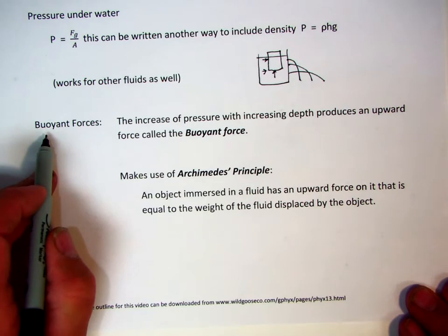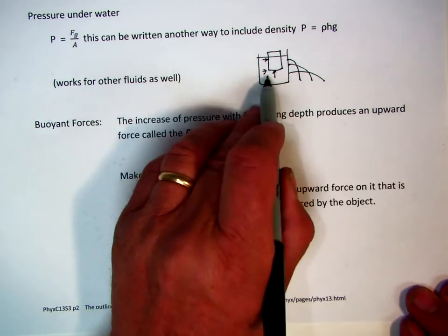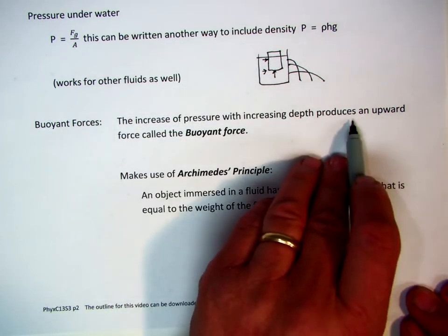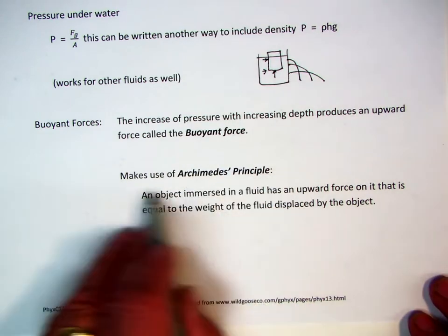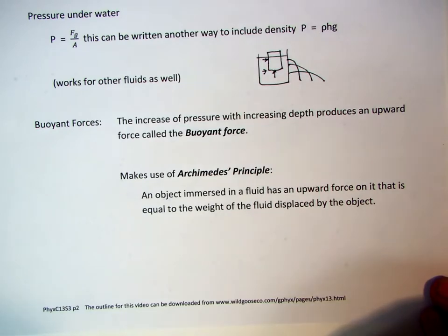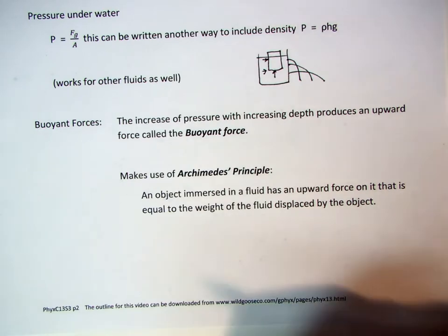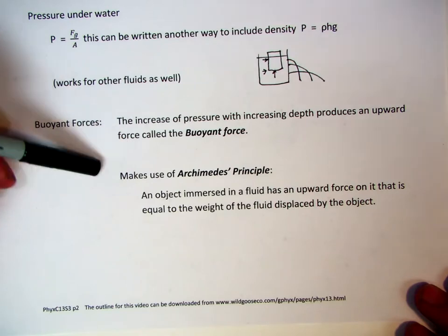The buoyant force then, the increase of pressure with increasing depth, which I just showed you, produces an upward force called the buoyant force. Now this also takes under consideration a principle known as Archimedes principle. Now you've all heard the story of Archimedes, how he laid back in his bathtub and realized that as he sat further in his bathtub, the water volume went up and he was able to calculate the mass or the volume of the irregular shaped object.